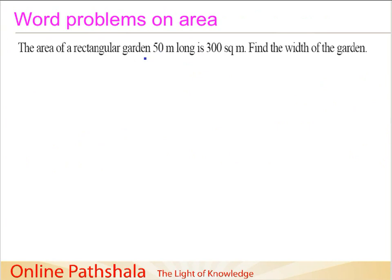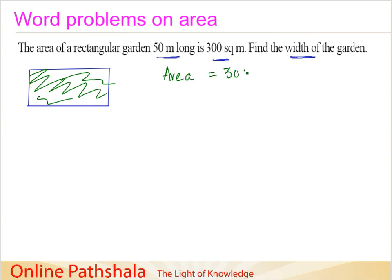The next problem says that the area of a rectangular garden 50 meter long is 300 square meter. Find out the width of the garden. Now here we can use a little bit of visualization. We have this rectangular garden, and we are told that the area of this region covered is 300 square meters. The length L is given as 50 meter. So I can say that this L here is 50 meter. Since this is the opposite side, this L is also going to be 50 meter. Now, what is the width? We do not know the width of the garden.